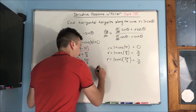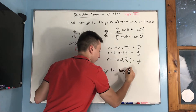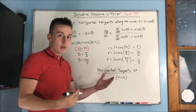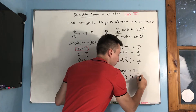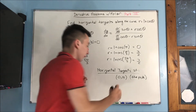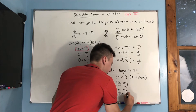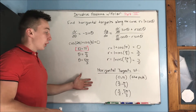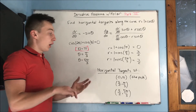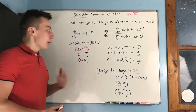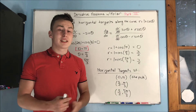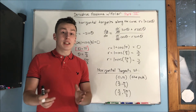So there are horizontal tangents at (0, π) — which is the pole — and at (3/2, π/3) and (3/2, 5π/3). We had to use a limit because we got zero in both the numerator and denominator, but other than that it's fairly straightforward — just applying what we know to polar. If this video helped, make sure to like and subscribe.